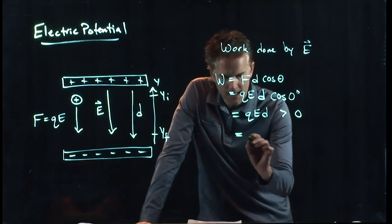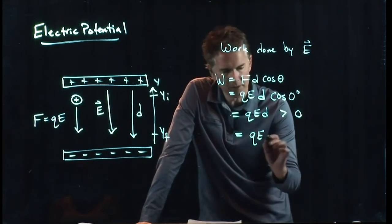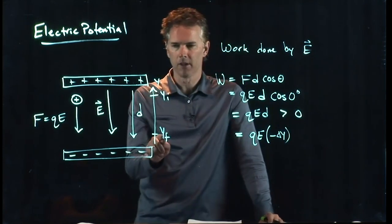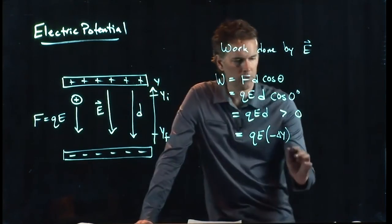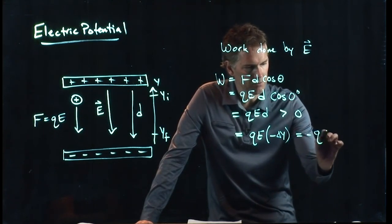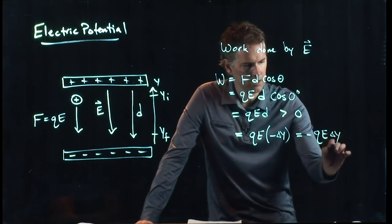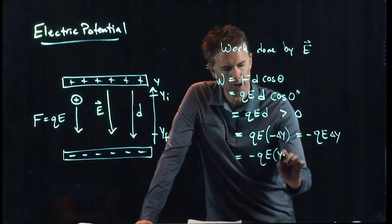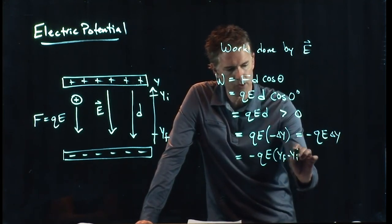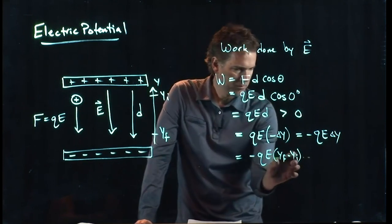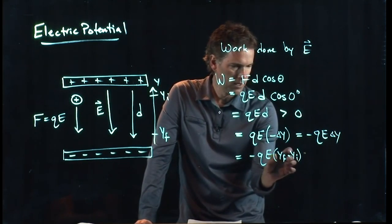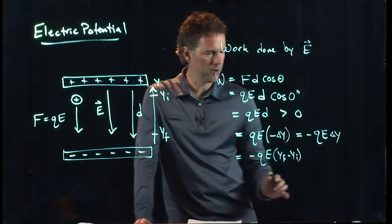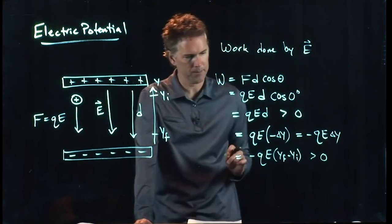But we know what D is. Just like we had before, it's going to be negative delta Y. Because YF is going to be smaller than Y initial. So this is minus QE delta Y, or minus QE times Y final minus Y initial. That number is smaller than YI. And so that thing is negative. The negative sign out in front makes sure that this is still a positive number.